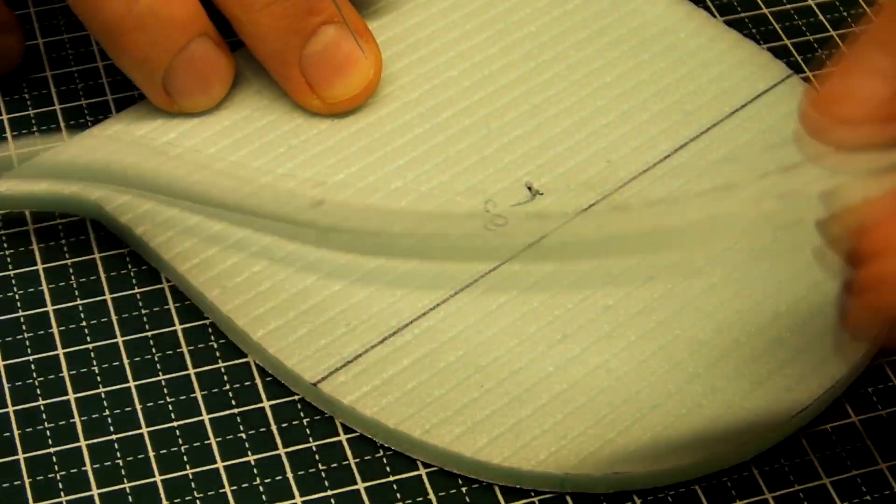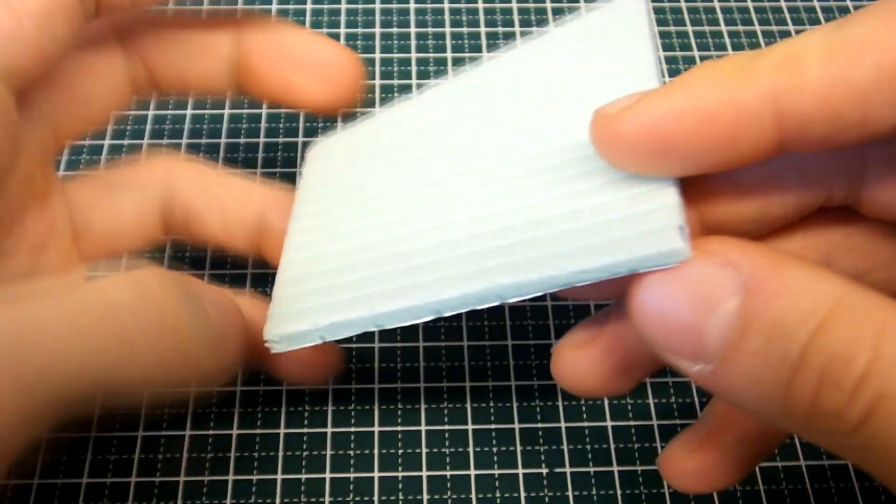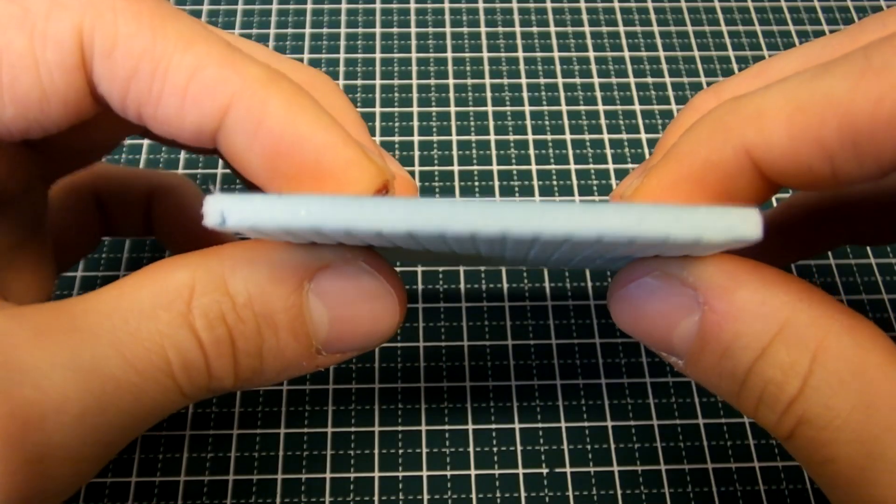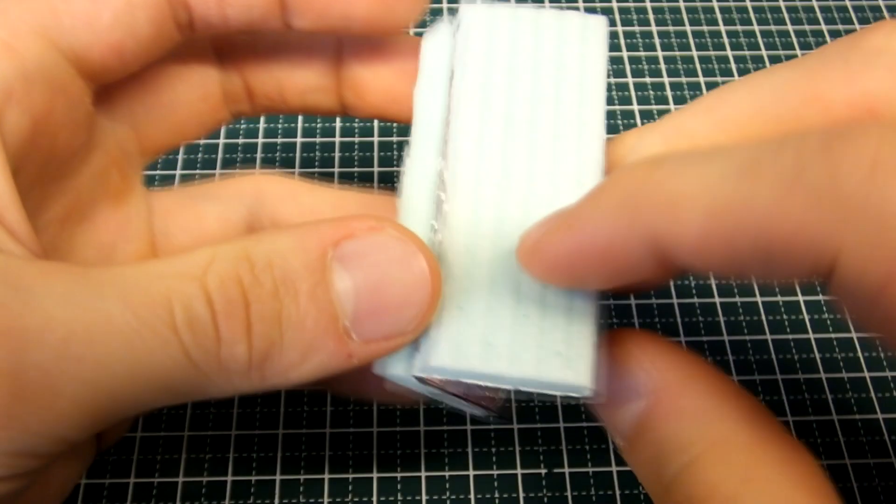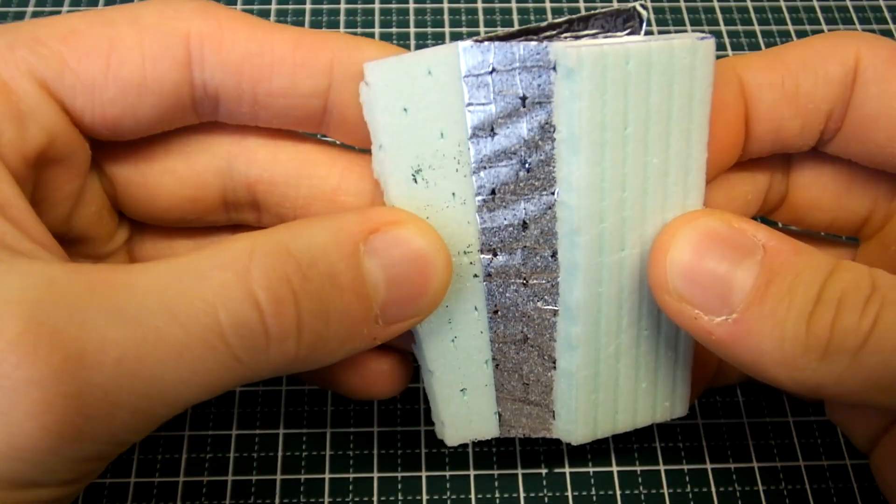Material of choice: a 5mm insulation board. Super light, easy to work with, and strong. It also has a plastic film on one side which can be easily removed if not desired.